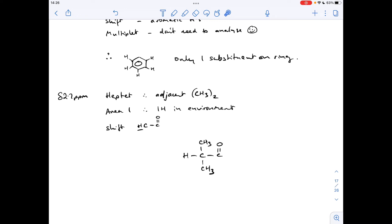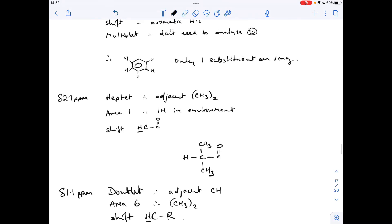So we're now talking about these protons here. If you think about their environment, they are in H to C to R. There's 6 of them, so obviously that's going to give us the area of 6, and they're adjacent to this single hydrogen, so they're obviously going to be split into a doublet.